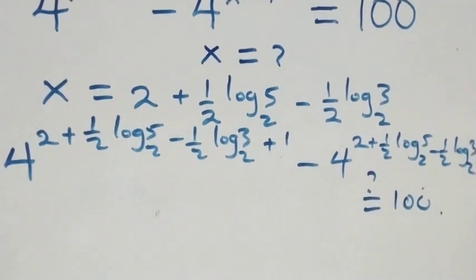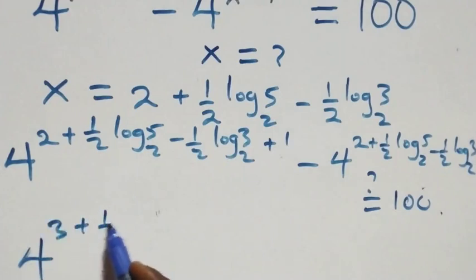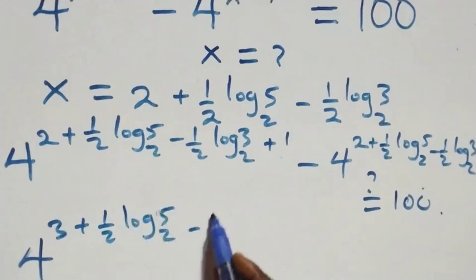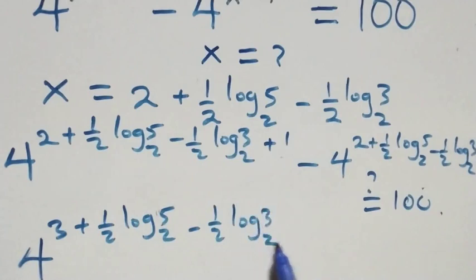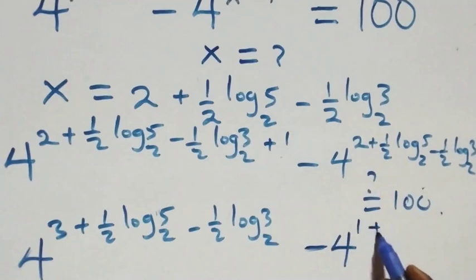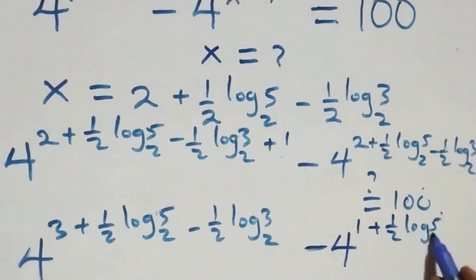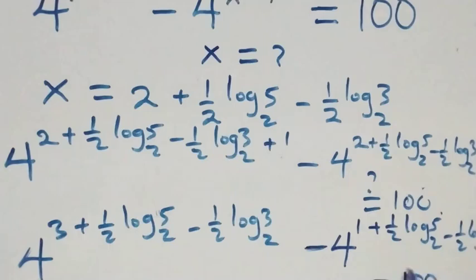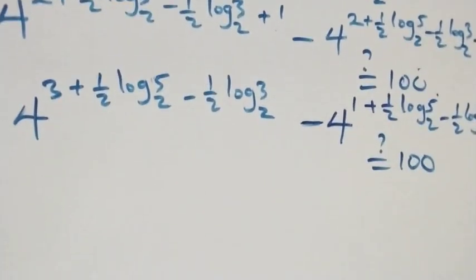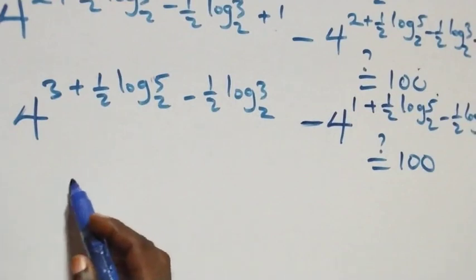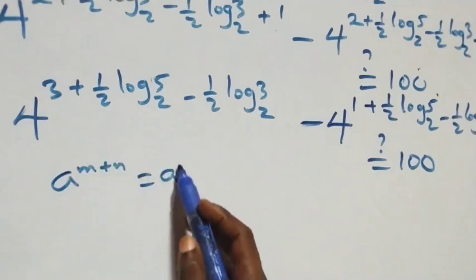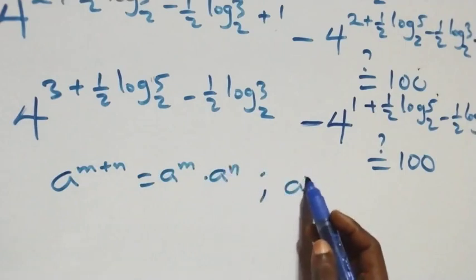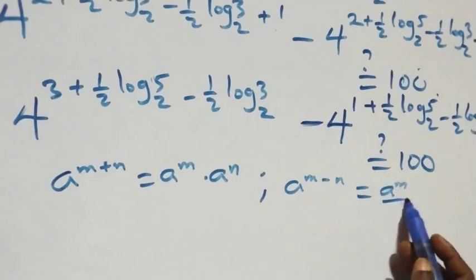We can bring 2 plus 1 together as 3, so we have 4 raised to power (3 + half·log₂5 − half·log₂3), minus 4 raised to power (1 + half·log₂5 − half·log₂3). This equals 100 on the right-hand side.